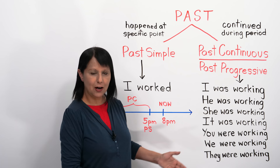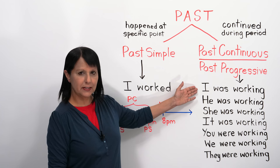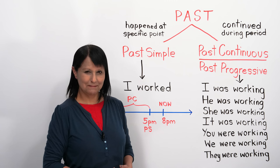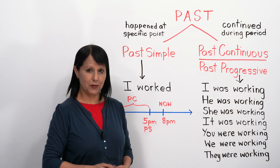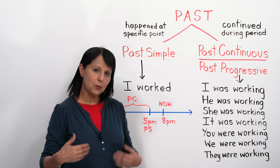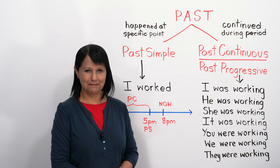Now let's look at how we form the past continuous. We use the subject plus the past tense of the verb 'to be' as a helping verb, then a verb plus -ing. For example: I was working, he was working, she was working, it was working. Then it changes: you were working, we were working, and they were working. That's your basic overview of the past continuous tense.